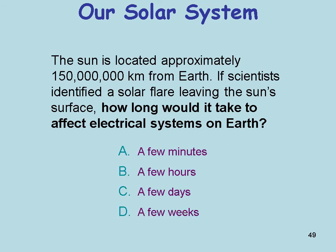Another question: The sun is approximately 150 million kilometers from Earth. If scientists identified a solar flare leaving the sun's surface, how long would it take to affect electrical systems on Earth? A few days. Scientists who observe the sun provide risk analysis of solar flares, and we'd have a few days warning before our electrical grid would be affected.